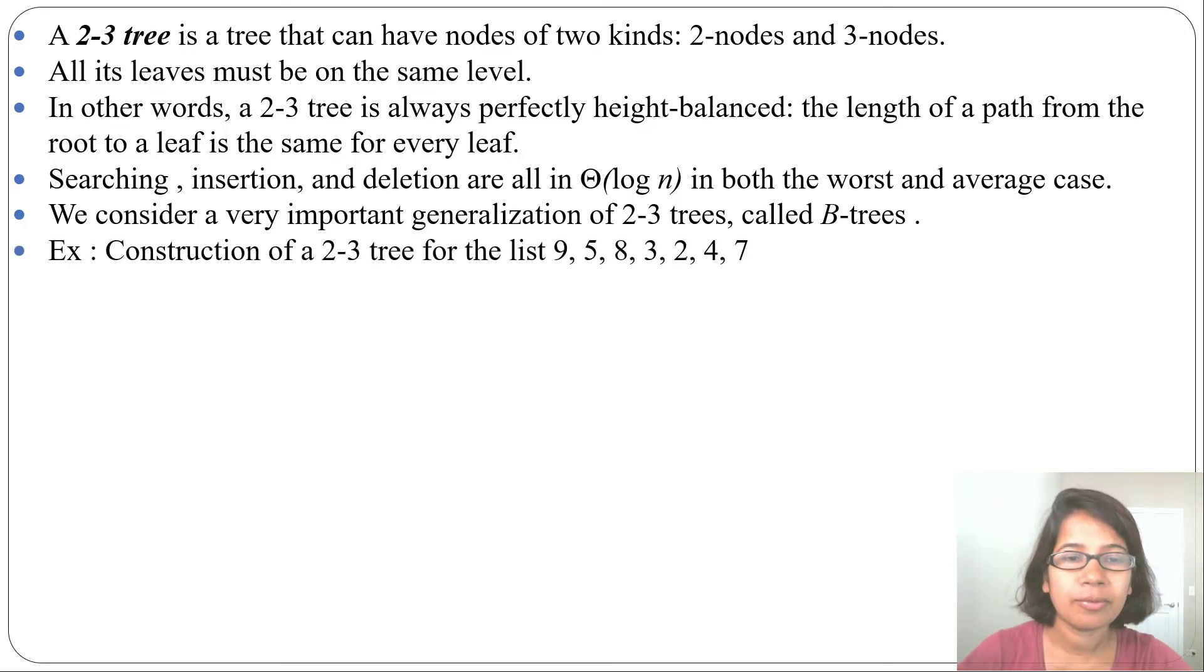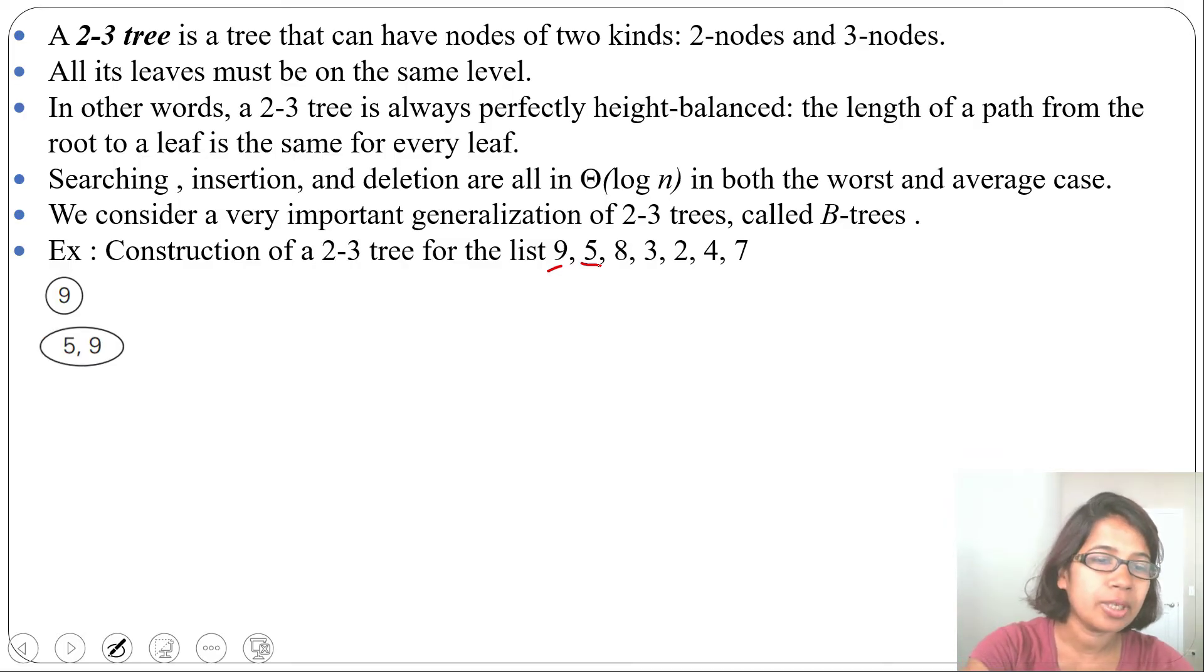Let's discuss an example of constructing a 2-3 tree. First we will insert 9. Next we will insert 5. 5 is less than 9, so 5 will be on the left side of 9. But one node can contain two values, so one node can contain 5 and 9. That's why the name is 2-3. There can be two nodes or three nodes.